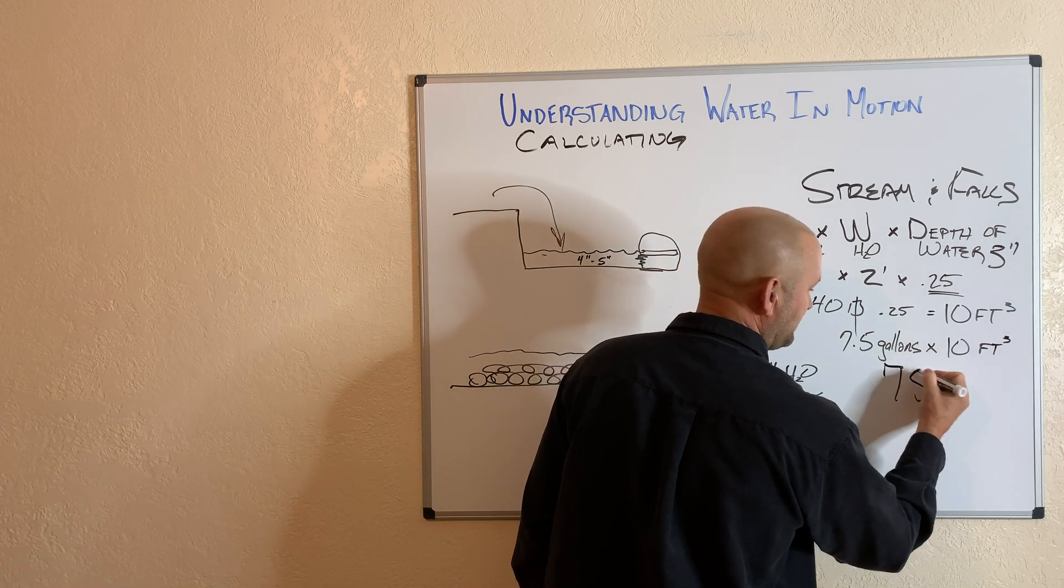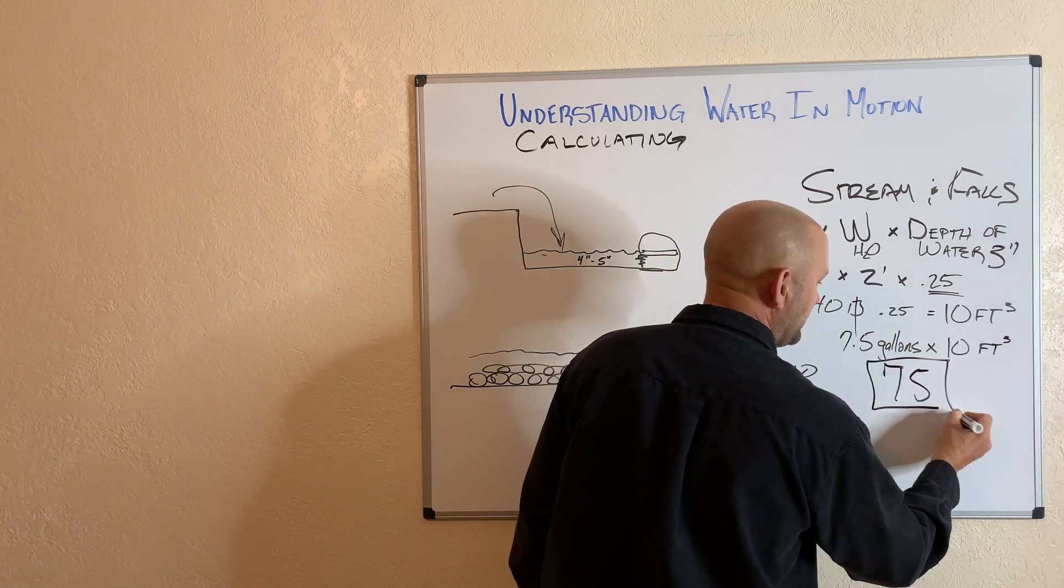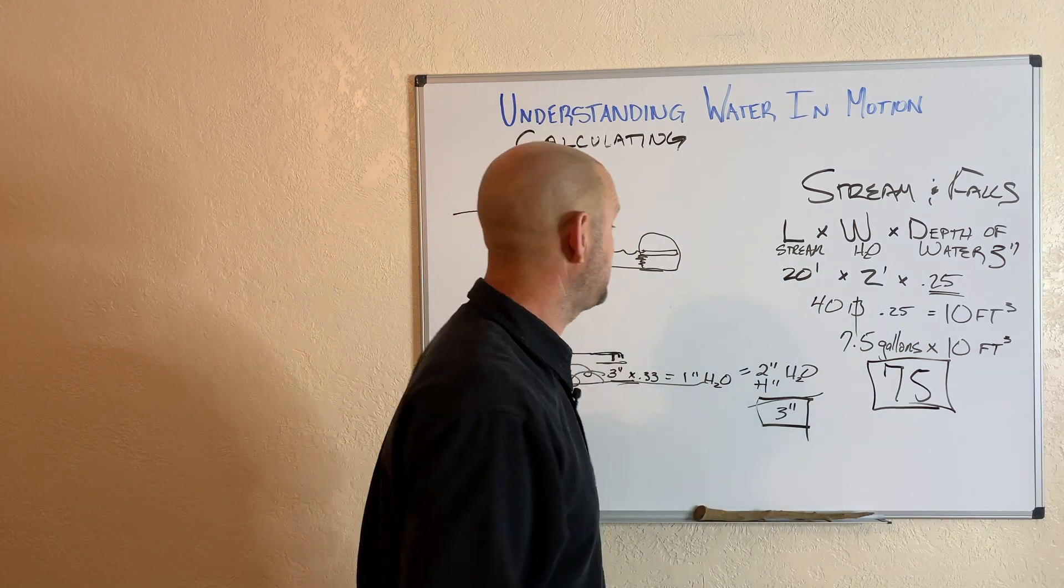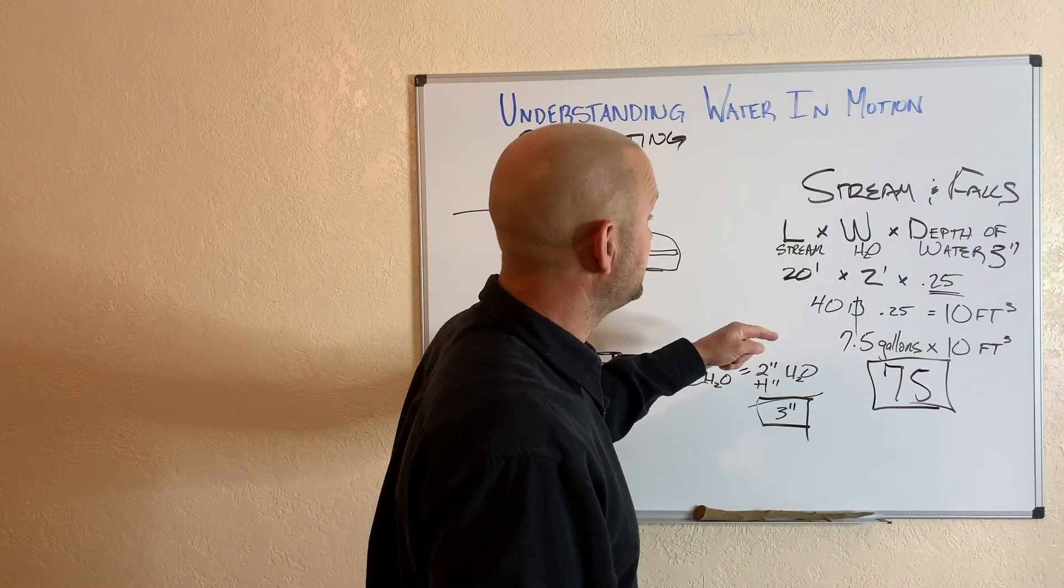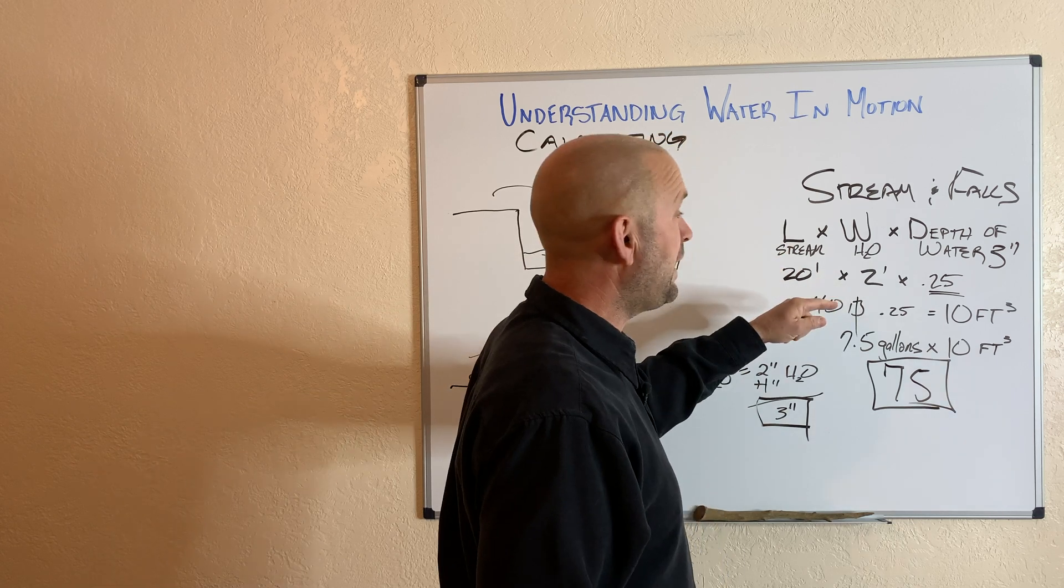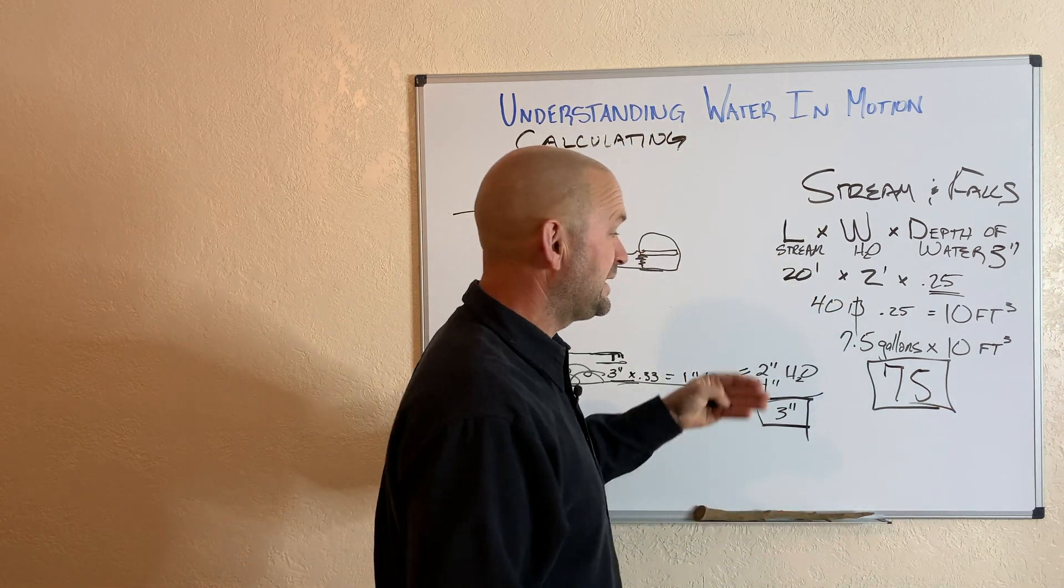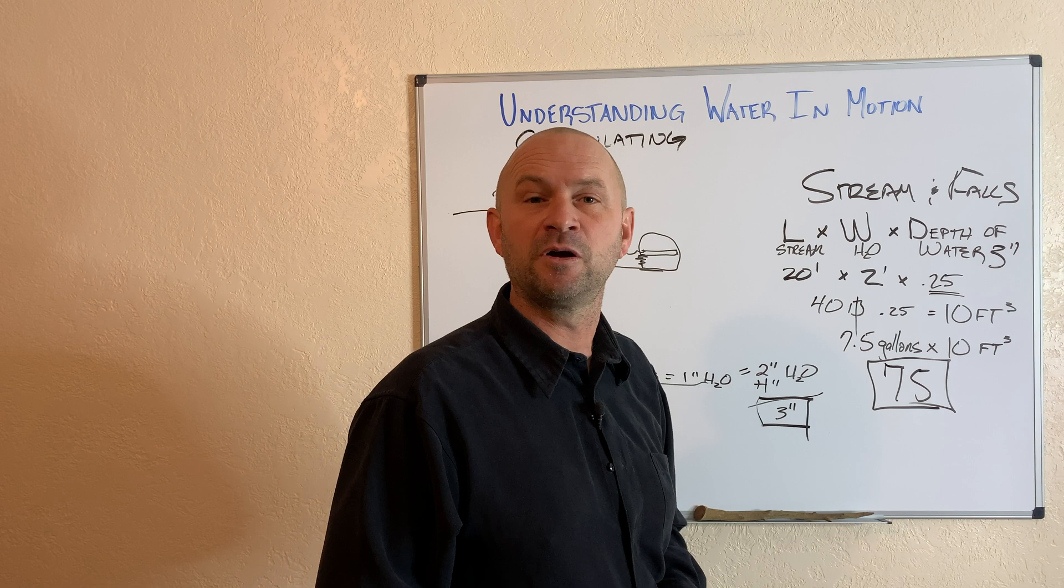I know, boring class is boring today, kids, but you would not believe how often I see this screwed up. So this instance, a 20-foot stream, two feet wide, three inches deep, gives me 75 gallons of water in motion.